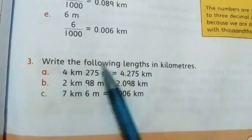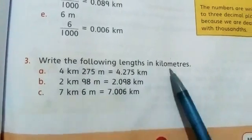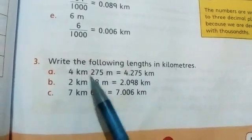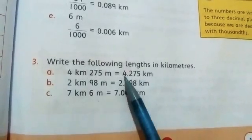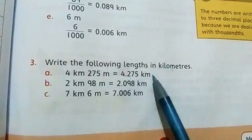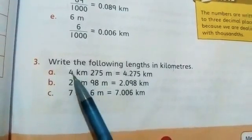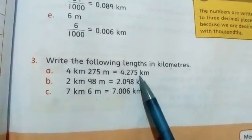If you have a question: write the following lengths in kilometers. How will you write it? It is given that you have 4 kilometers 275 meters. When we write it in kilometers, we will place decimal point. How will you write it? 4.275.